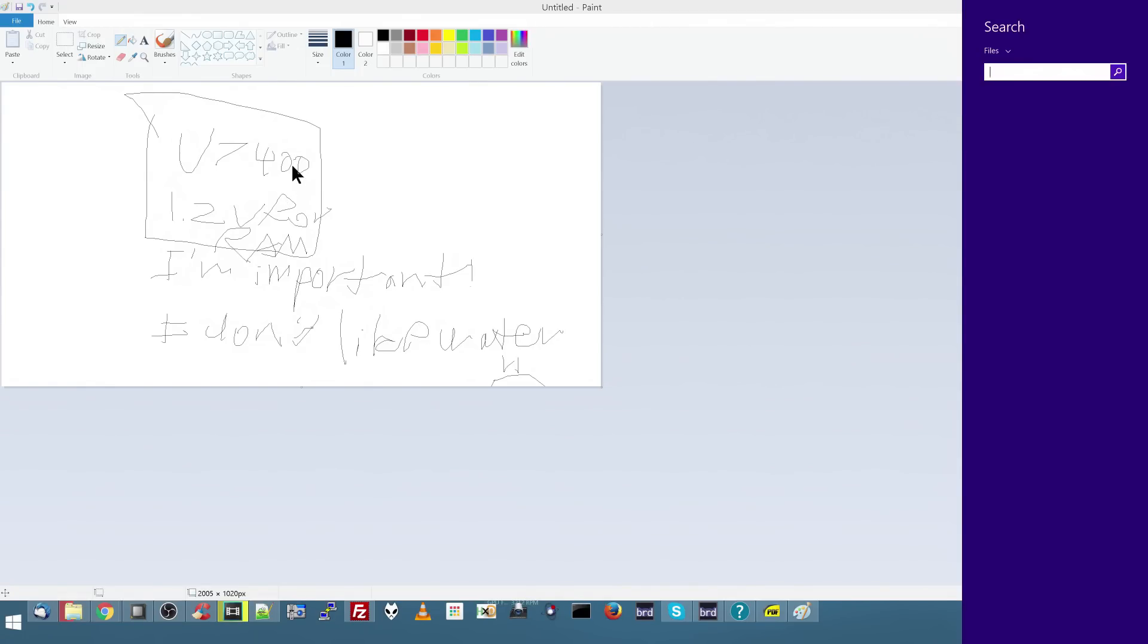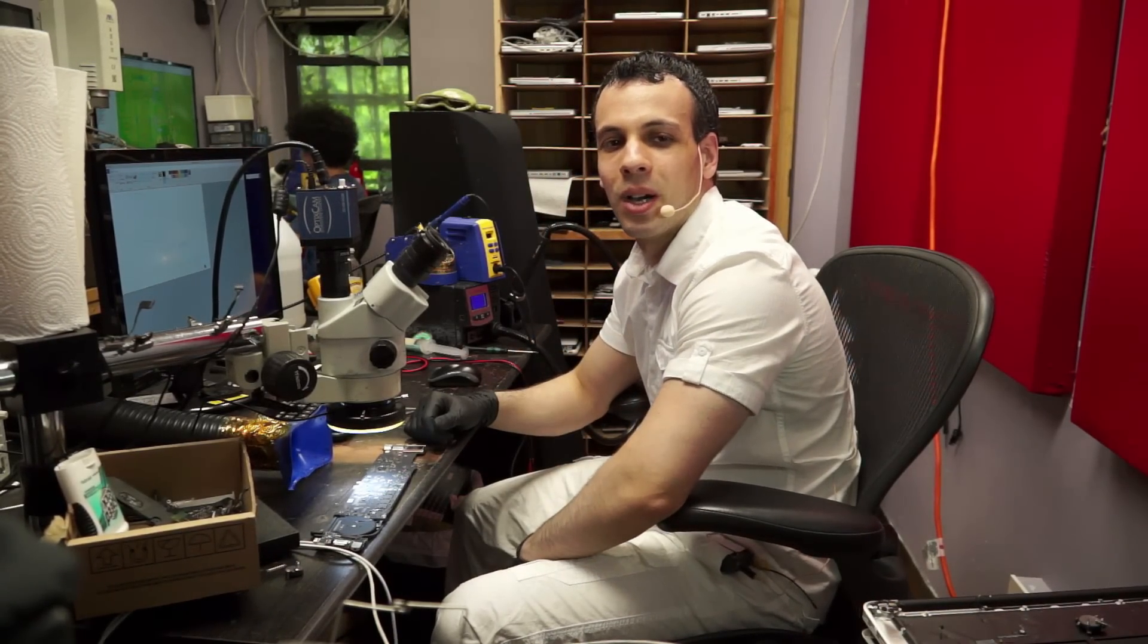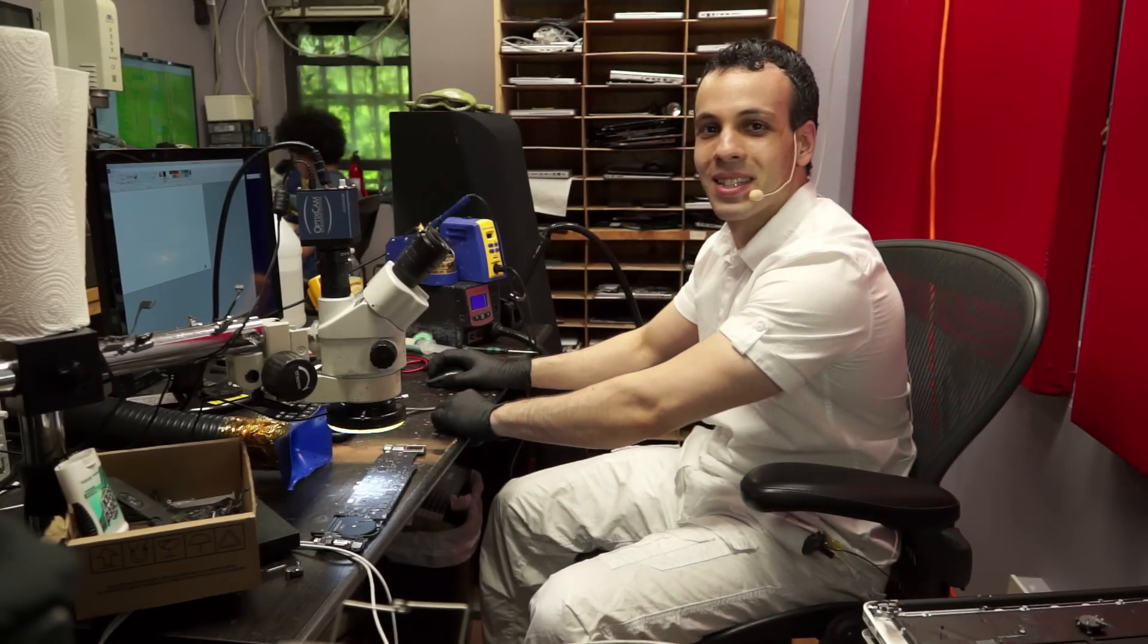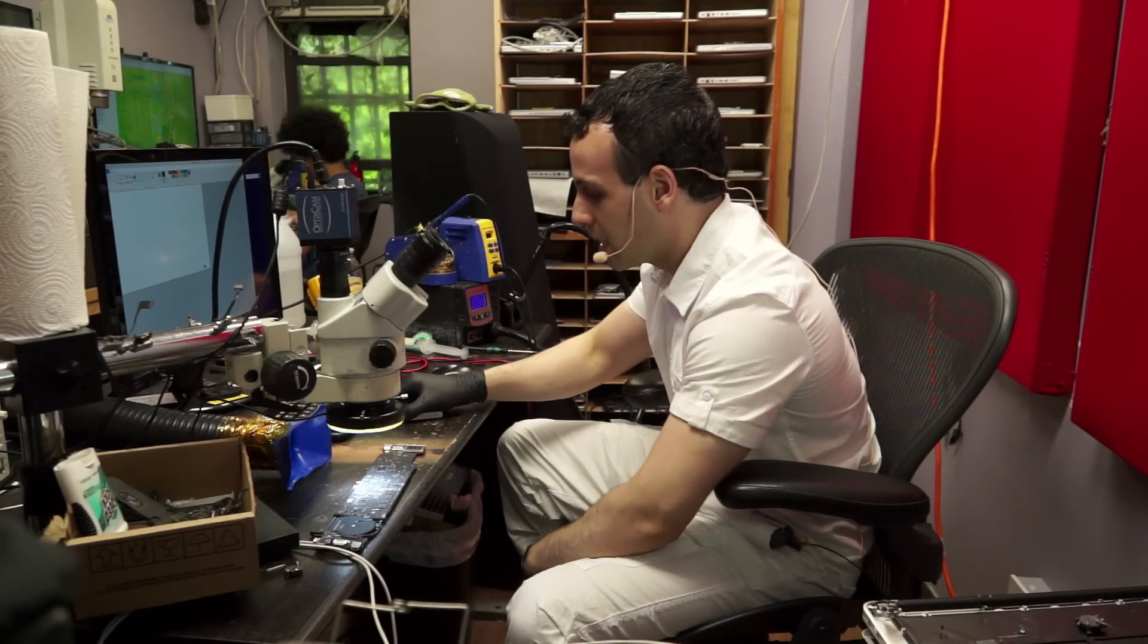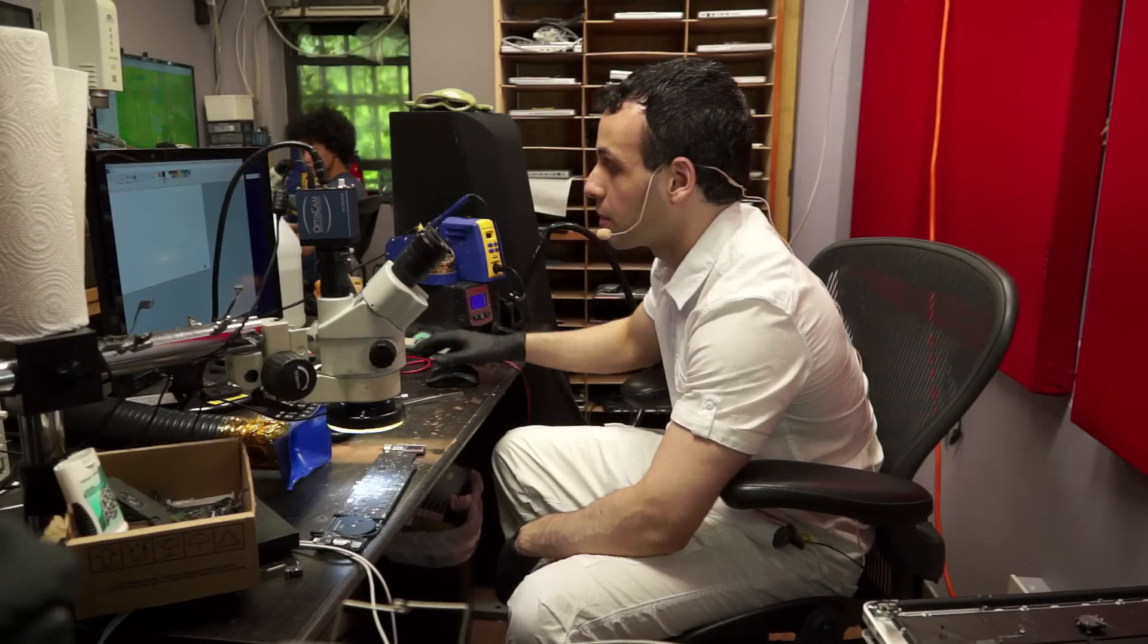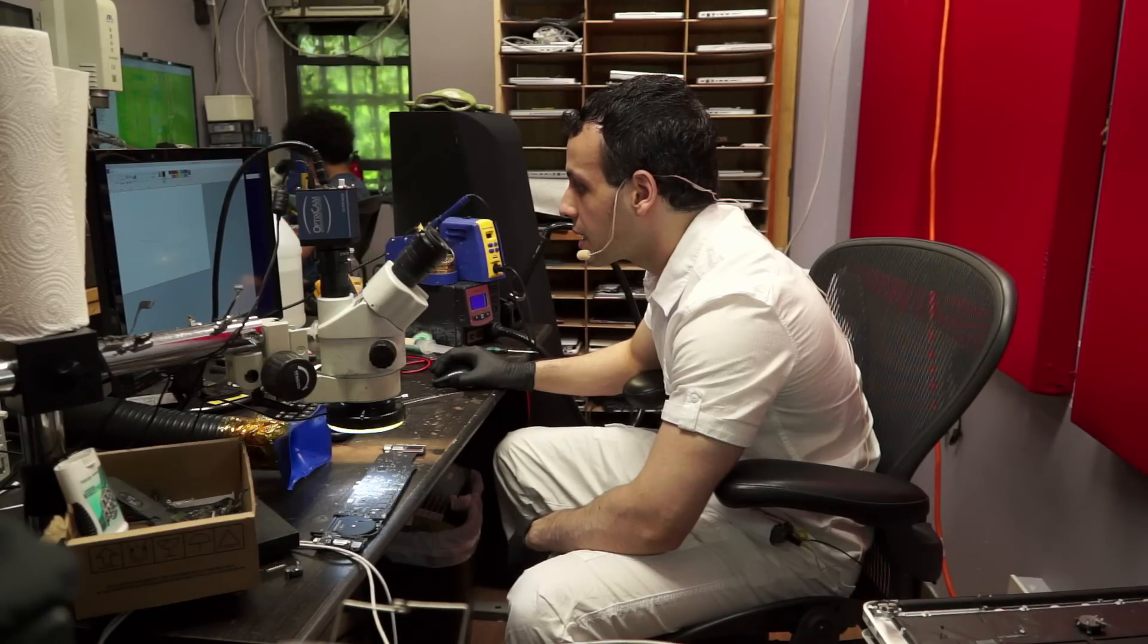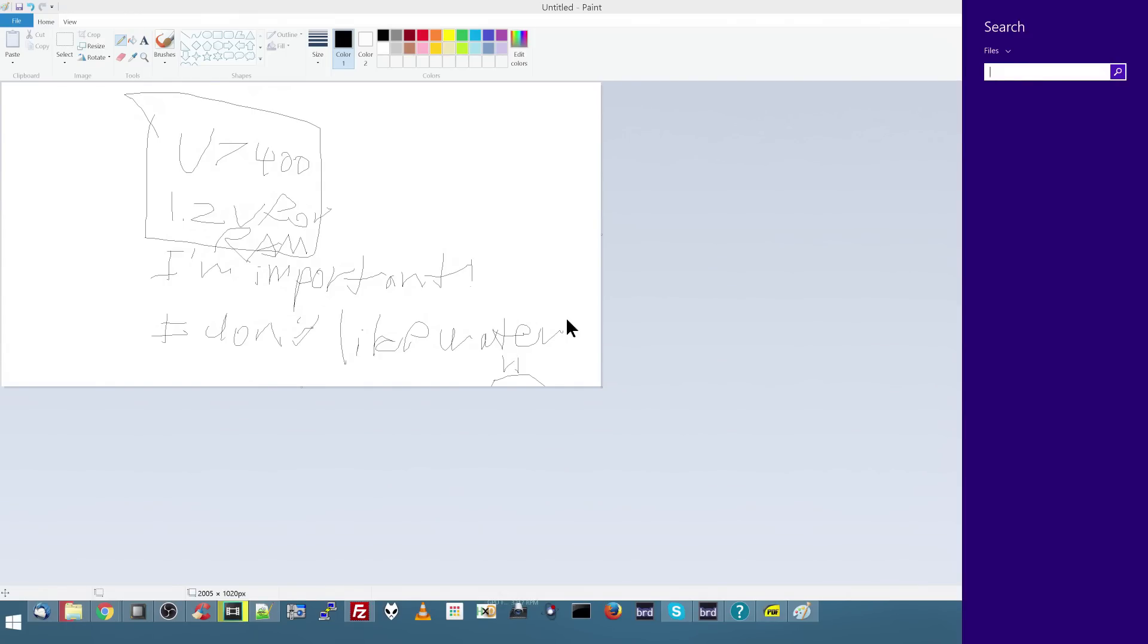Okay, so it seems like that chip is U7400. It's 1.2 volts for the RAM, and it's important. And I don't like water, said frowny face. What? What do you guys want from me? I can't, I'm not a visual artist. I can't draw. This is what you're going to have to put up with until I'm fully informed and up to date on what the lovely people at Kilpatrick and Townsend have in store for me. I tried, man. I tried.